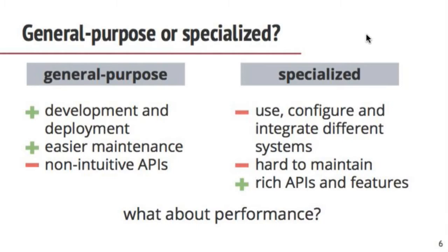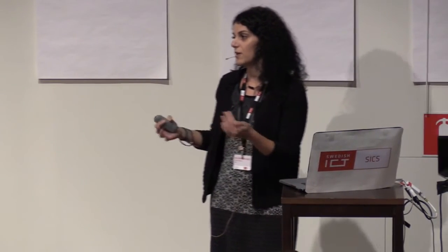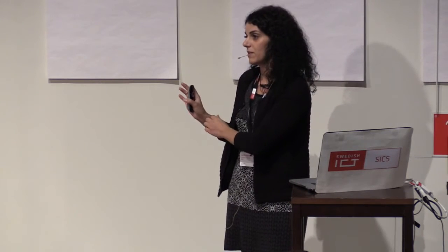What are the pros and cons of each approach? Having specialized systems, the biggest advantage is that they have rich and very intuitive APIs. If you want to write a graph problem in a general system, it might be hard if you don't have the right APIs. On the other hand, you have to learn how to use, configure, put together, and maintain a lot of different systems. With a general purpose system like Flink, you have only one application to maintain and one system to configure. What is missing is the intuitive APIs, and this is the gap we're trying to fill with Gelly.